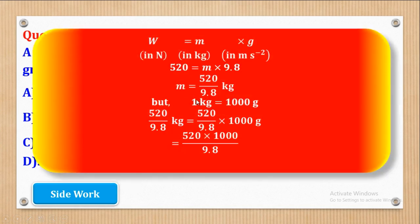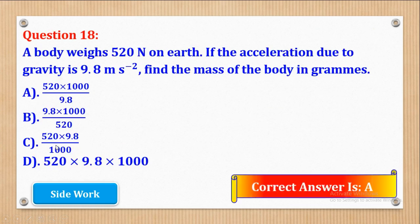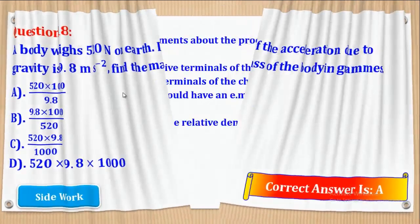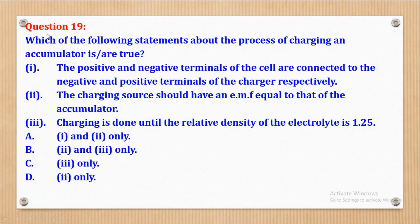Since one kilogram equals 1000 grams, the mass in grams equals (250 over 9.8) times 1000, which can be rearranged as 250 times 1000 all divided by 9.8. Wait — the weight given is 250 newtons, so the numerator should use 250. Comparing with the given options, part A matches this expression and is the correct answer.